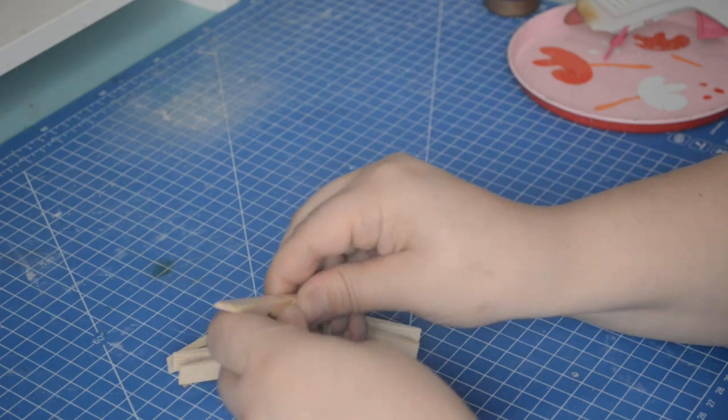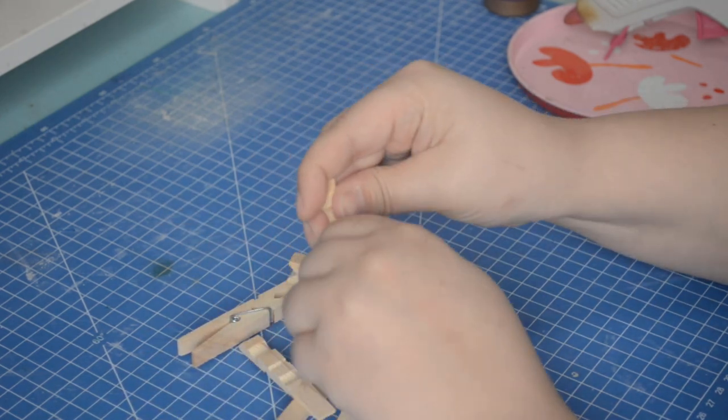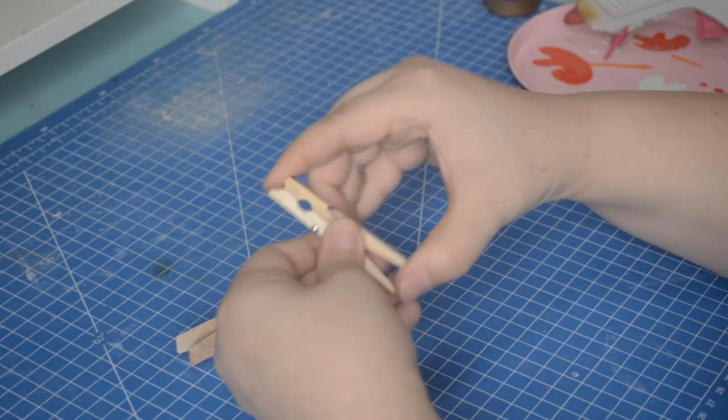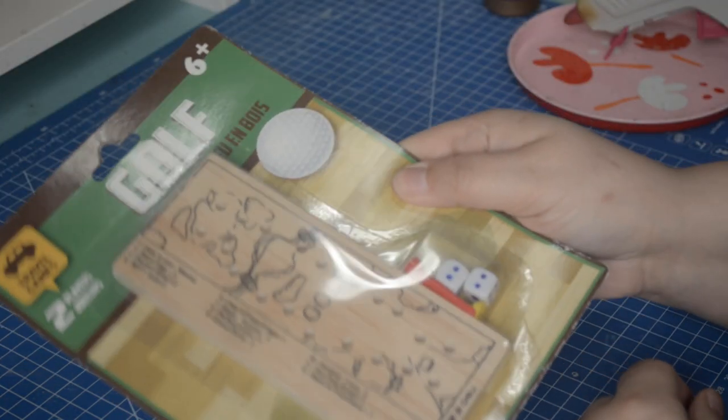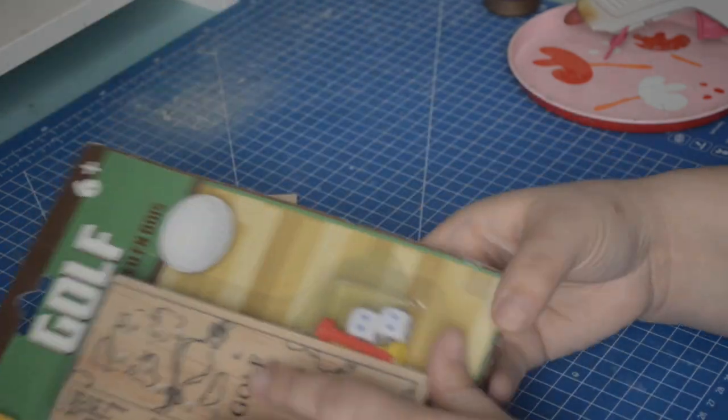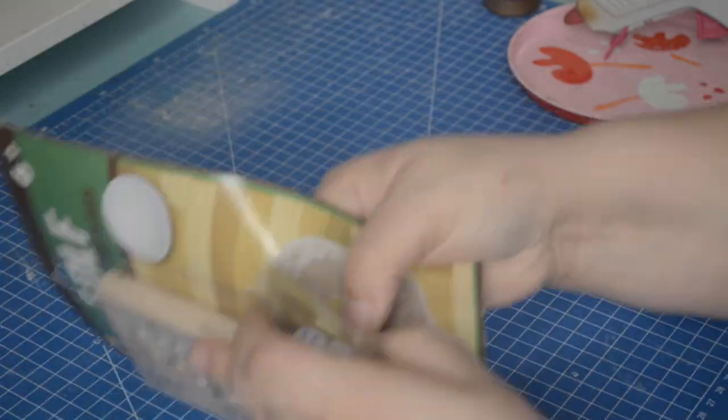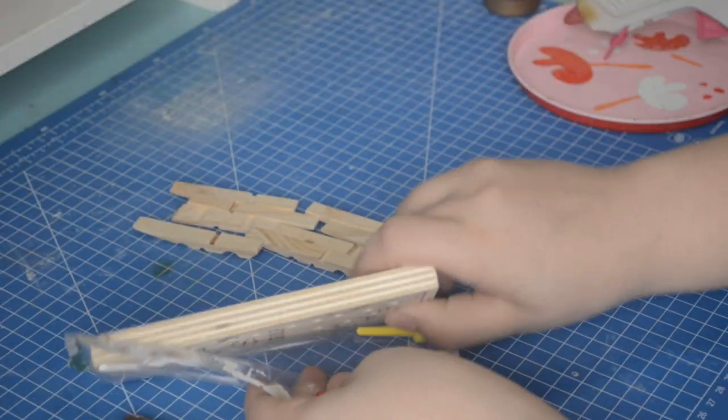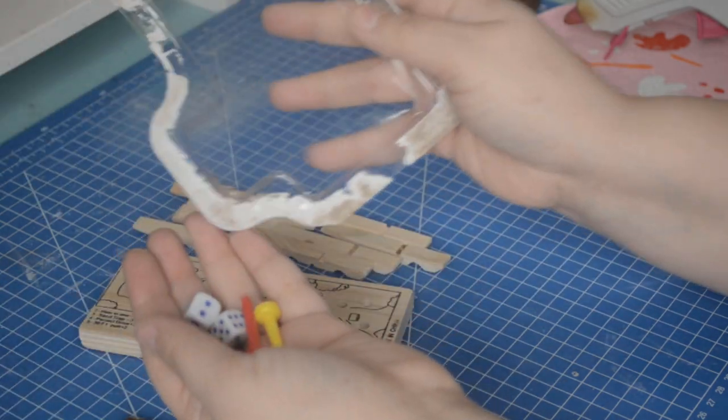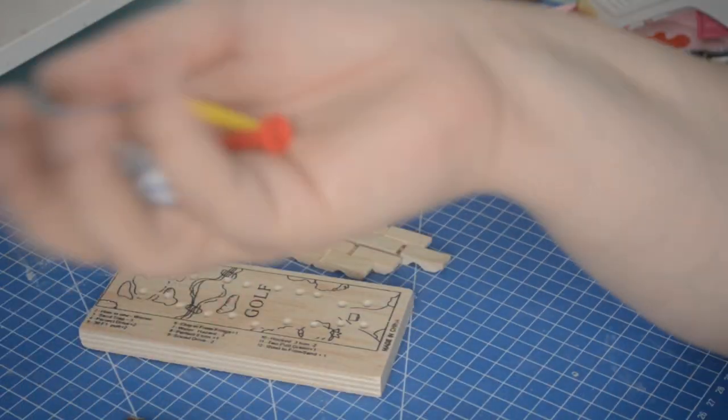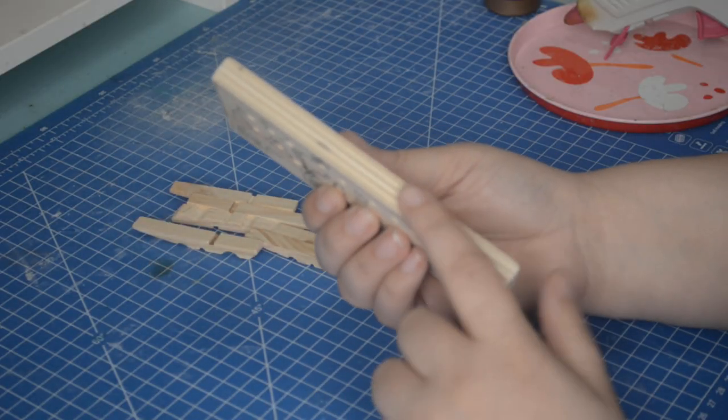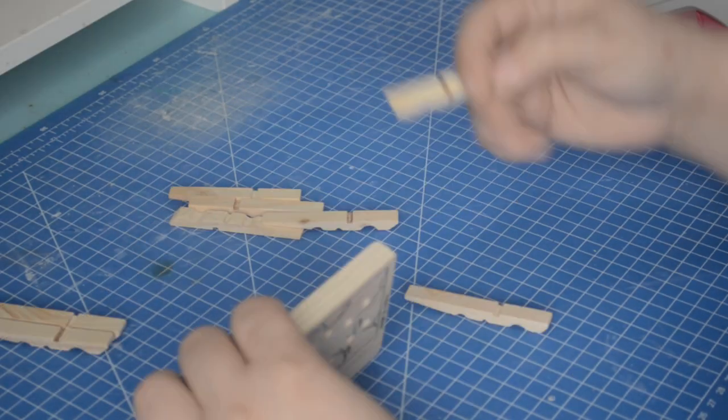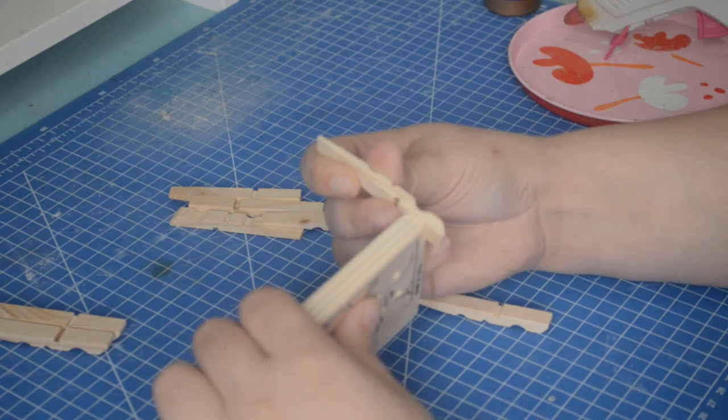For both our projects today, our main materials will be wooden clothespins. I found a pack of 30 for about a dollar. The way we're going to use them is by separating both halves of the clothespin from its little metal spring part. They aren't glued or anything, so a little tug will separate them easily. The base of our first bed is going to be this wooden dollar store golf game, taking care to save the little game pieces for future use.